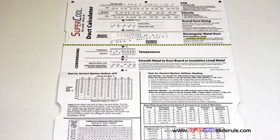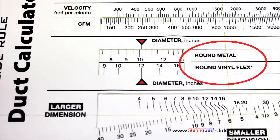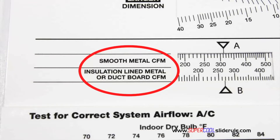Inside is packed with even more information. It performs sizing of both metal and flexible duct, and has the only direct reading conversion from smooth metal to insulation lined metal we've ever seen. The majority of technicians have never been taught that if the insulation is on the inside of the ductwork, you cannot size it with a regular duct calculator.